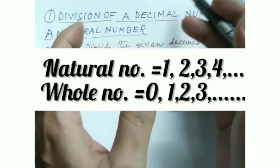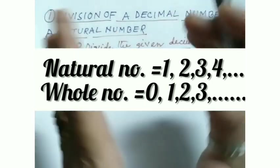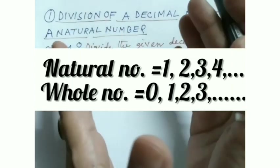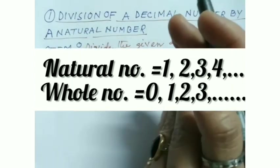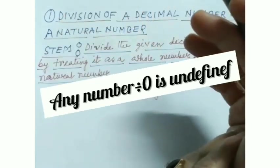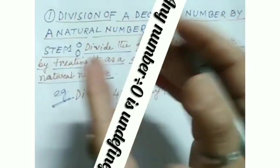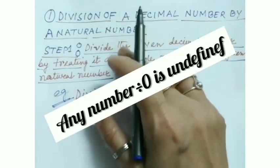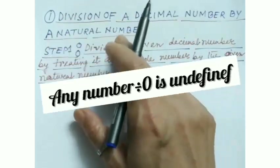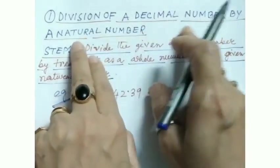Look at this - I'm saying divided by a natural number instead of whole number. Why? Because we know natural numbers along with zero are whole numbers, but in division we can't divide any number by zero. There is no solution - any non-zero number divided by zero is undefined. So naturally we have taken a natural number for excluding zero.